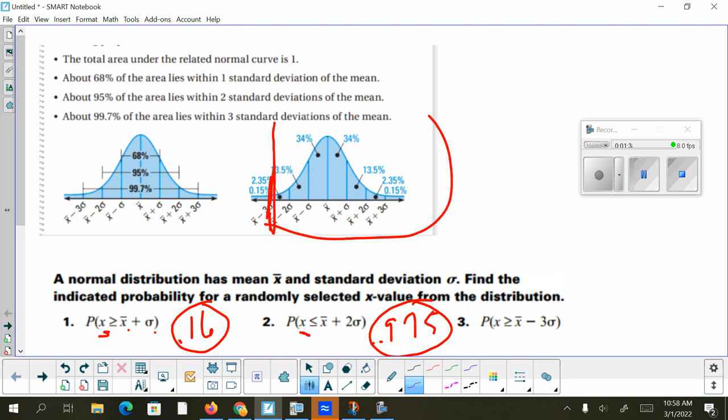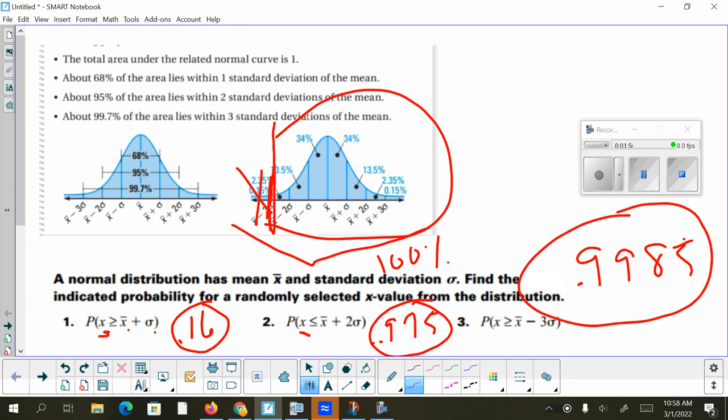We will add up every zone above there. Now, one thing you can keep in mind is the whole entire region is 100%, and the only thing we don't want is that area. So the quickest way is just to do 100% minus 0.15%. So it's 99.85% or 0.9985.